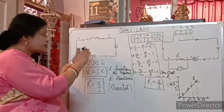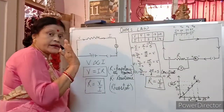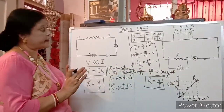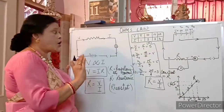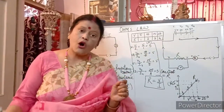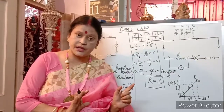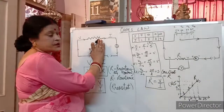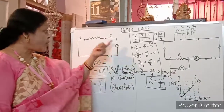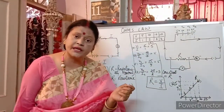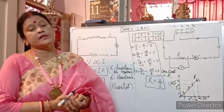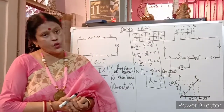Resistance means to oppose the current. The current flowing — the charges coming — resistance will not stop them, but will control them, create opposition, obstruction. It slows the current down, just like speed breakers on roads slow vehicles down to prevent accidents. Resistance is the property of a conductor which opposes the flow of current.